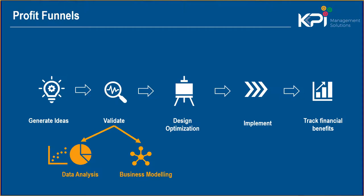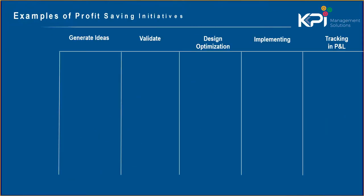Practically, the funnel process looks something like this: we've got the five funnels — generate ideas, validate, design and optimize, implement, and then track in the P&L.